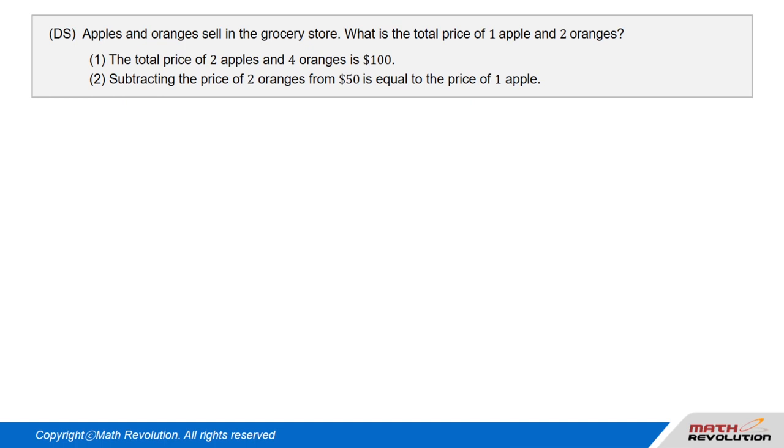Condition 1: The total price of two apples and four oranges is $100. Condition 2: Subtracting the price of two oranges from $50 is equal to the price of one apple.